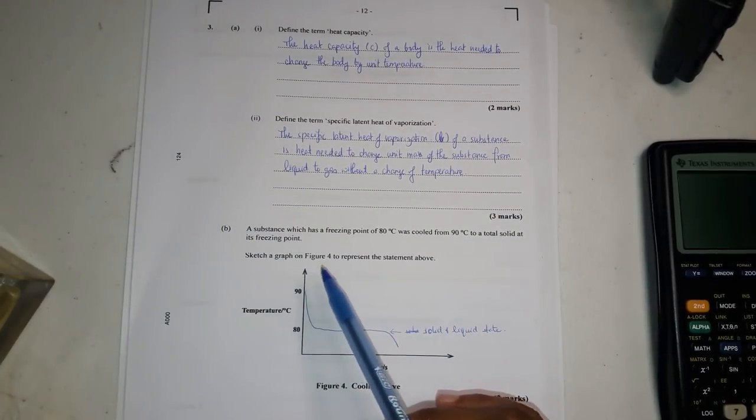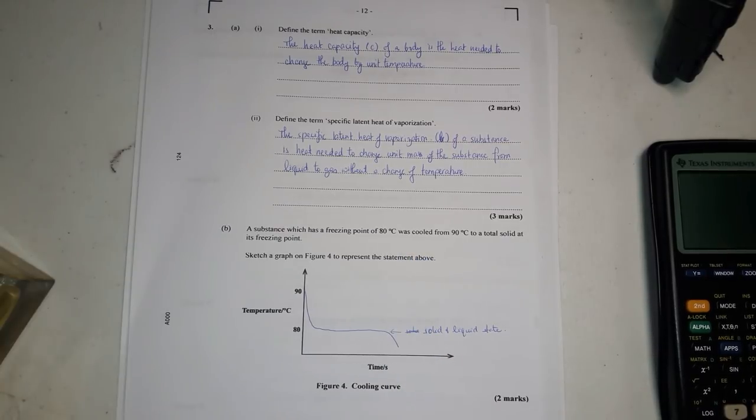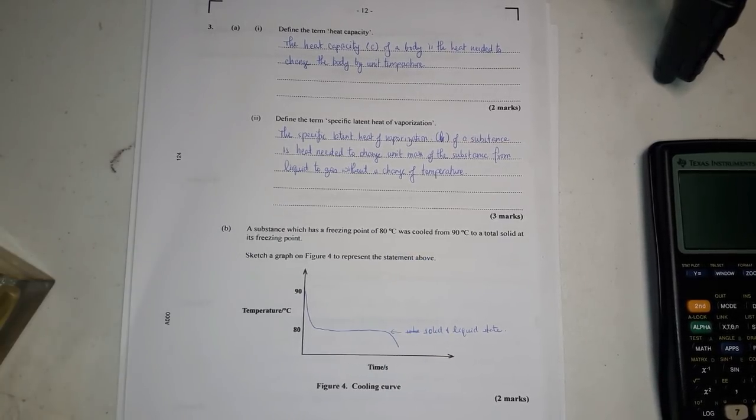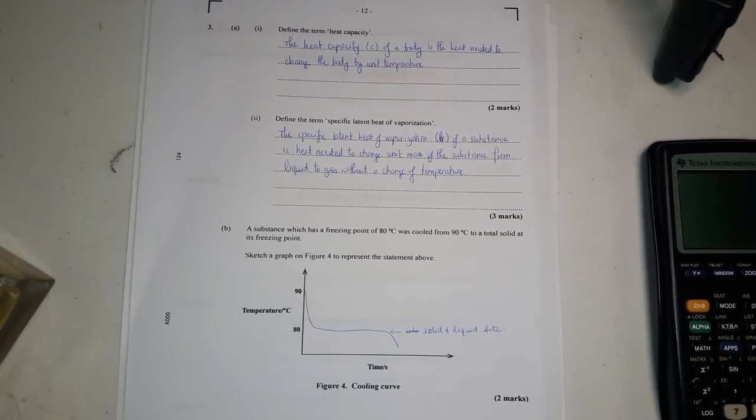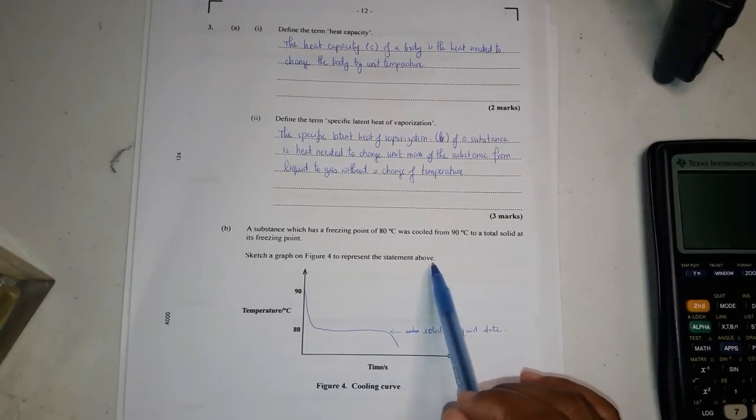Now a substance which has a freezing point of 80 degrees Celsius was cooled from 90 degrees Celsius to a total solid at its freezing point. Sketch a graph on figure four to represent the statement above.